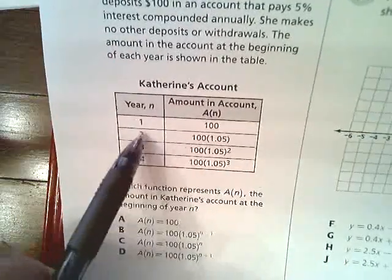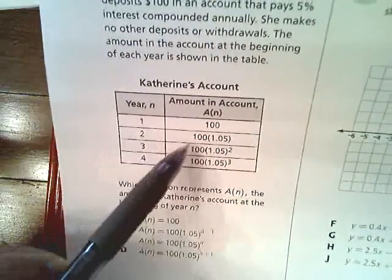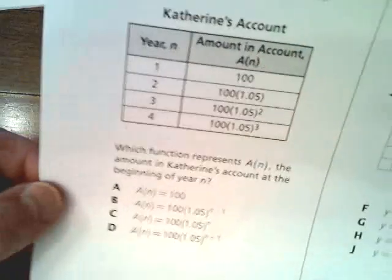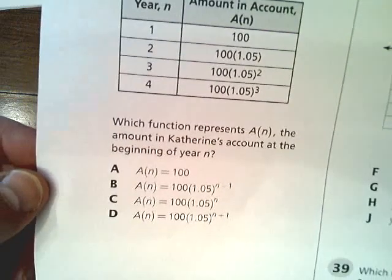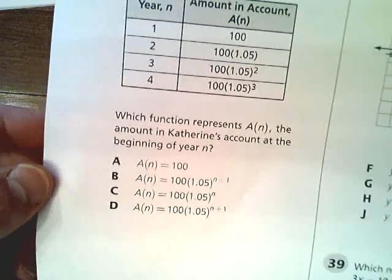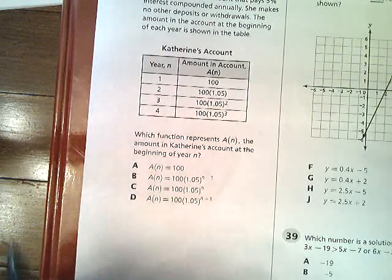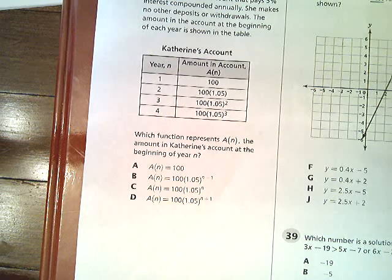At the beginning of year 1, she puts $100. Year 2, 3, and 4 are shown and it goes up. Which function represents the amount in Catherine's account at the beginning of year n? That is, if we were looking for an equation that could tell us what it would be in 30 years, we could use this equation to figure it out just by plugging in the value of 30, which would be n.